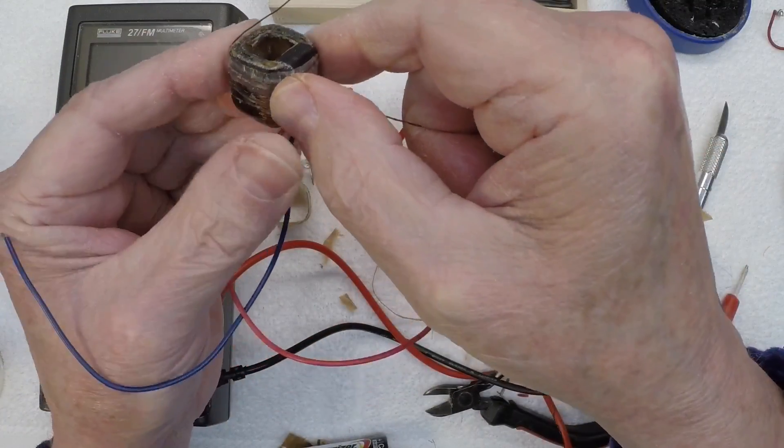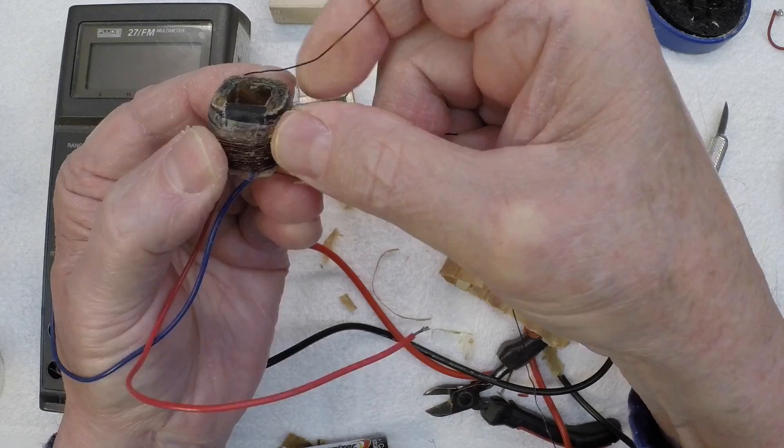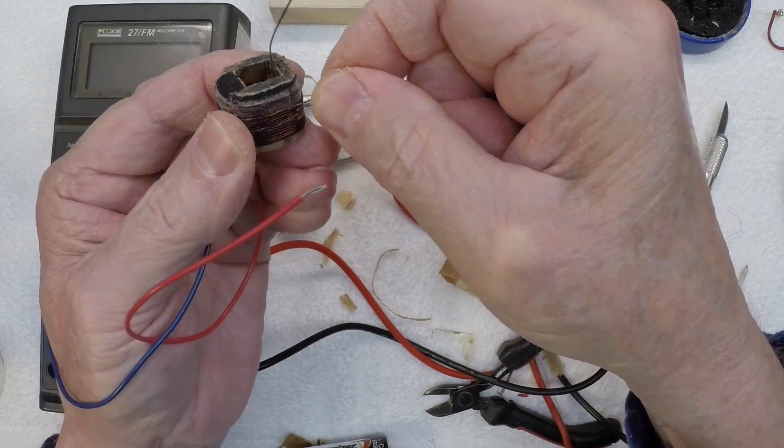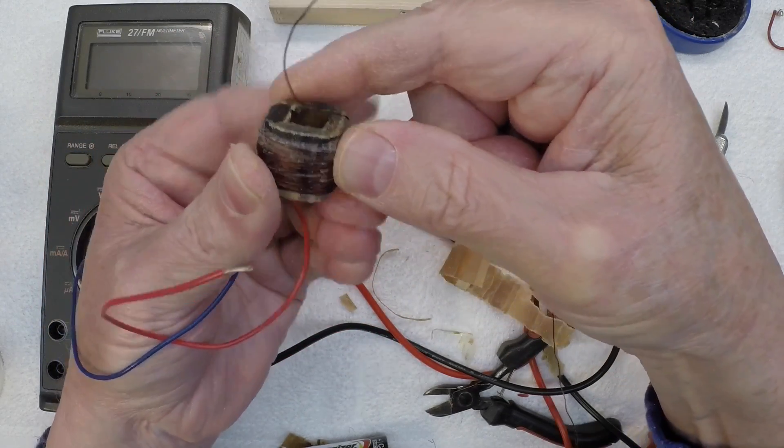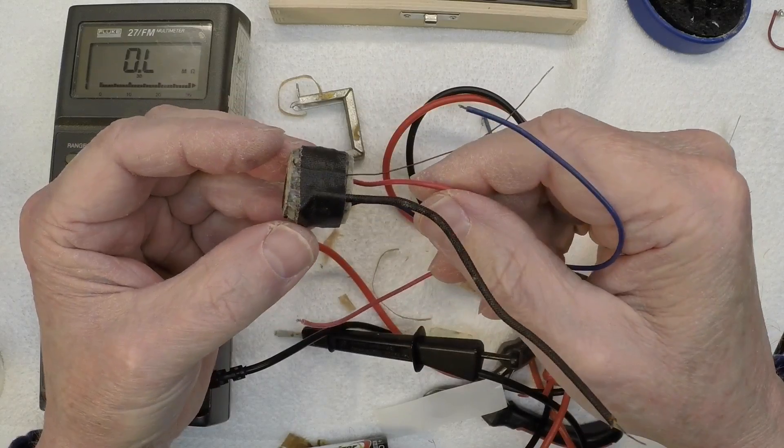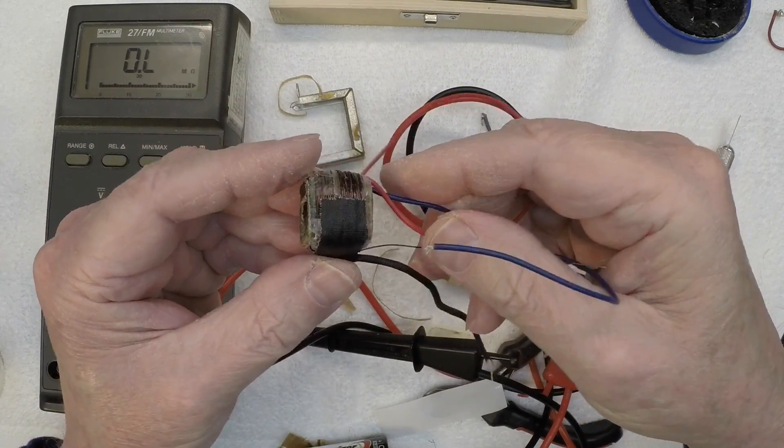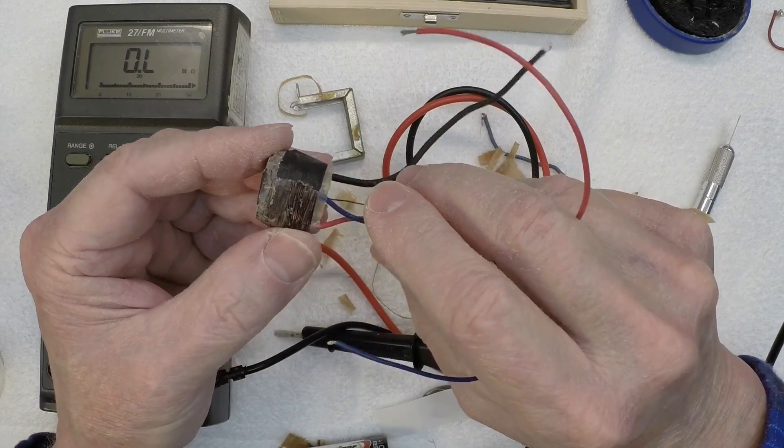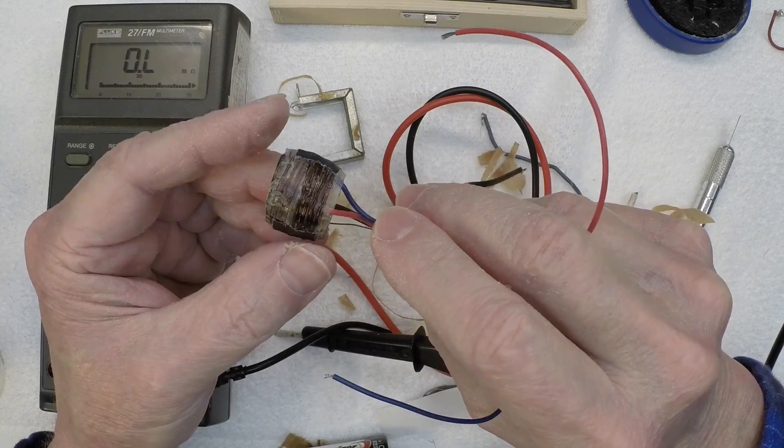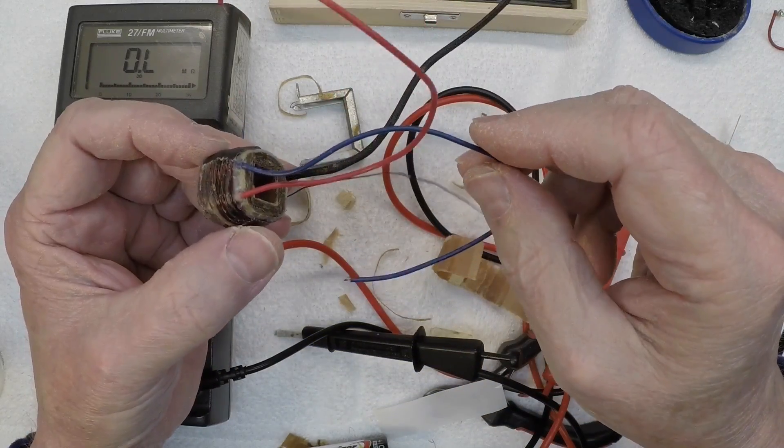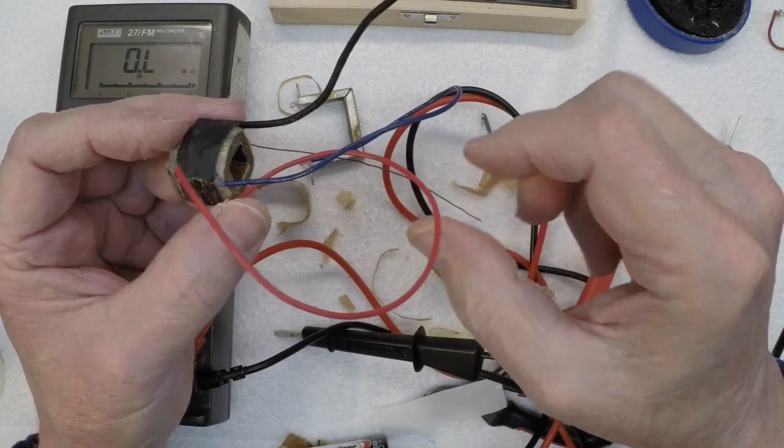Still rewinding that secondary. Final touches here, putting a little more gaffer tape on the outside of the primary winding. And then I'm going to recheck DC resistance here to make sure it's still good.